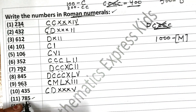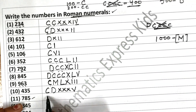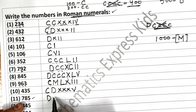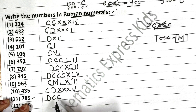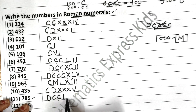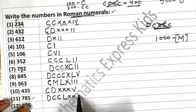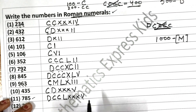Now this is 785. First write 500, then add 200 to it — that is 700 as DCC. Now for 80: first write 50, then 60, 70, 80 — LXXX. And then 5 as V.